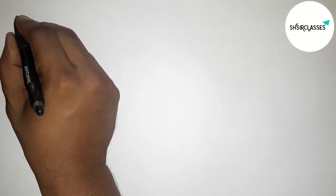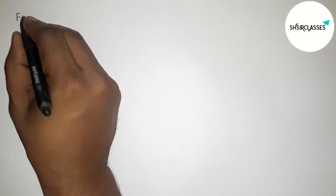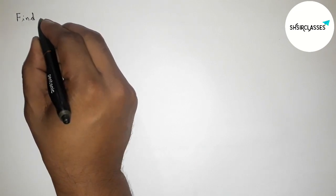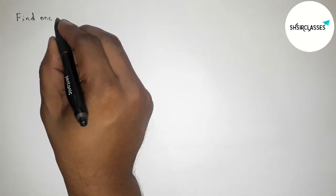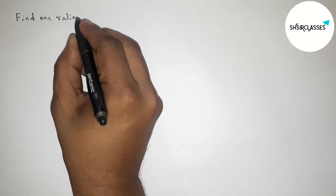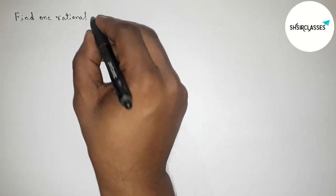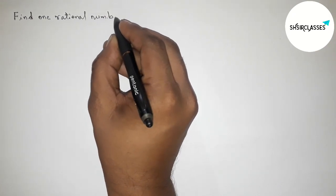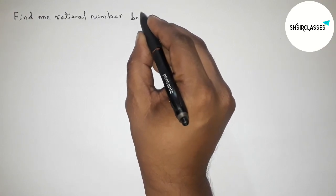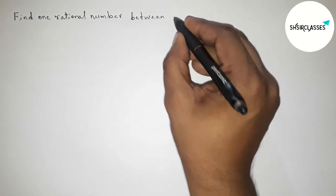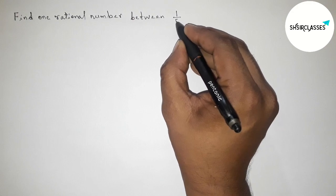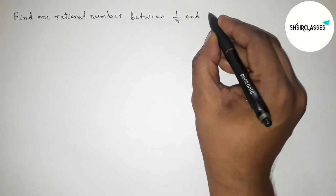Hi everyone, welcome to SI share classes. Today in this video we have to find one rational number between 1/5 and 1/3 in easy way. So please watch the video till the end. Let's start the video.